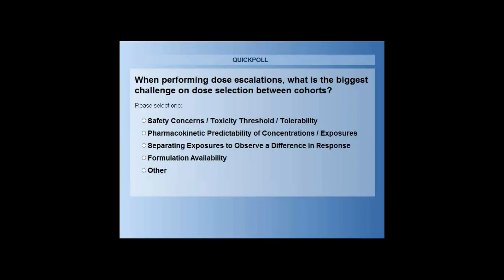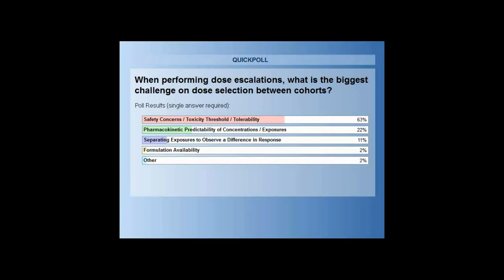Just a few more seconds. Okay, I'll be closing the poll right now — it looks like most of the audience has voted. Here we can see the results: 63 percent for safety concerns, toxicity threshold and tolerability; 22 percent for pharmacokinetic predictability of concentrations and exposures; 11 percent for separating exposures to observe a difference in response; 2 percent for formulation availability; and 2 percent for other.